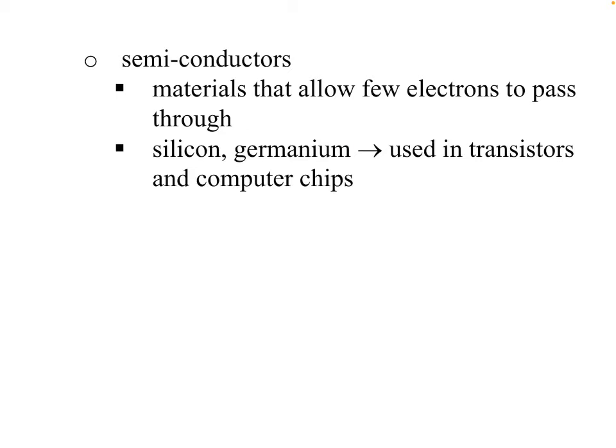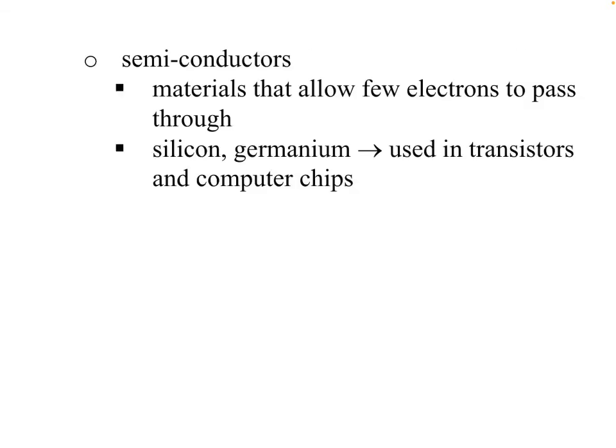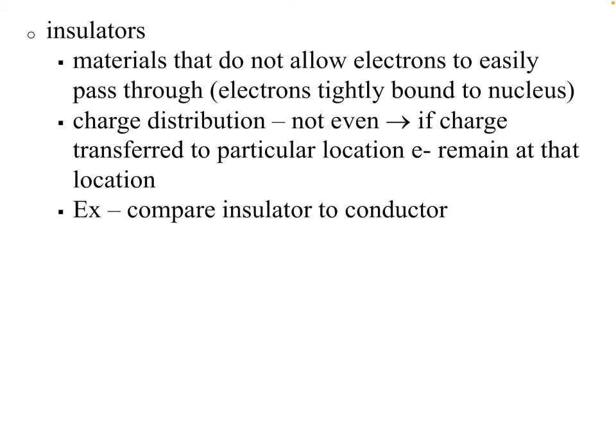Semiconductors are materials that allow just a few electrons to pass, but not as freely as a conductor would. Examples include silicon and germanium. These are used in transistors and computer chips because we want some conduction but not too much. Insulators are materials that don't allow electrons to pass through easily at all — the electrons are very tightly bound to the nucleus. If you give charge to an insulator, it doesn't spread evenly on the surface because the electrons can't move.